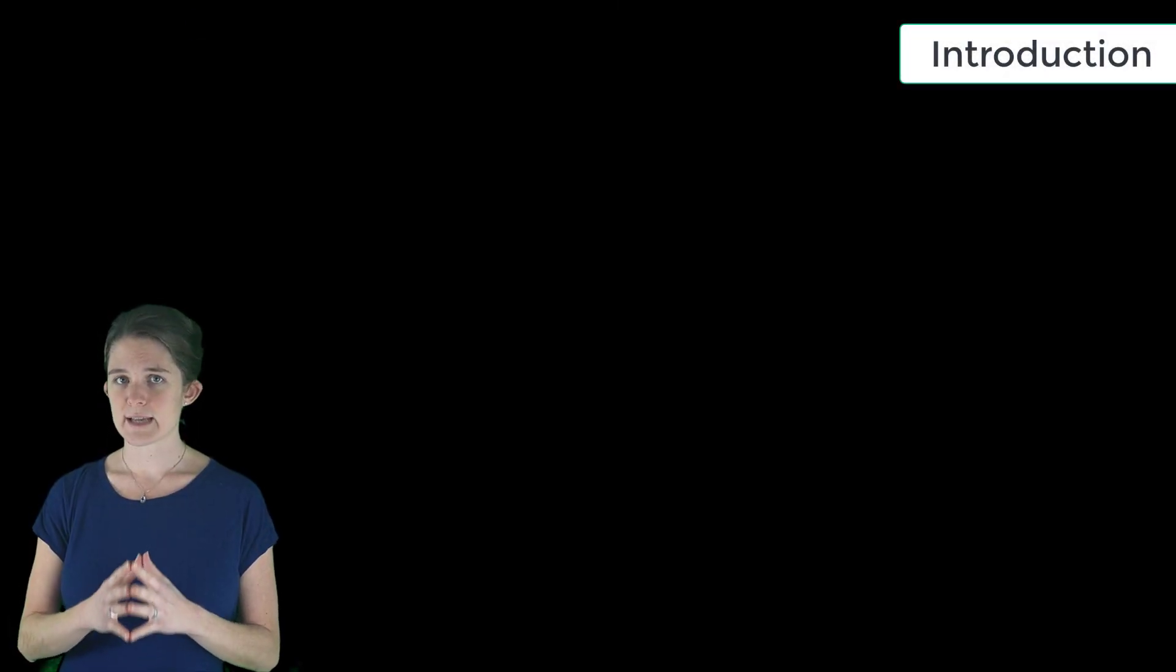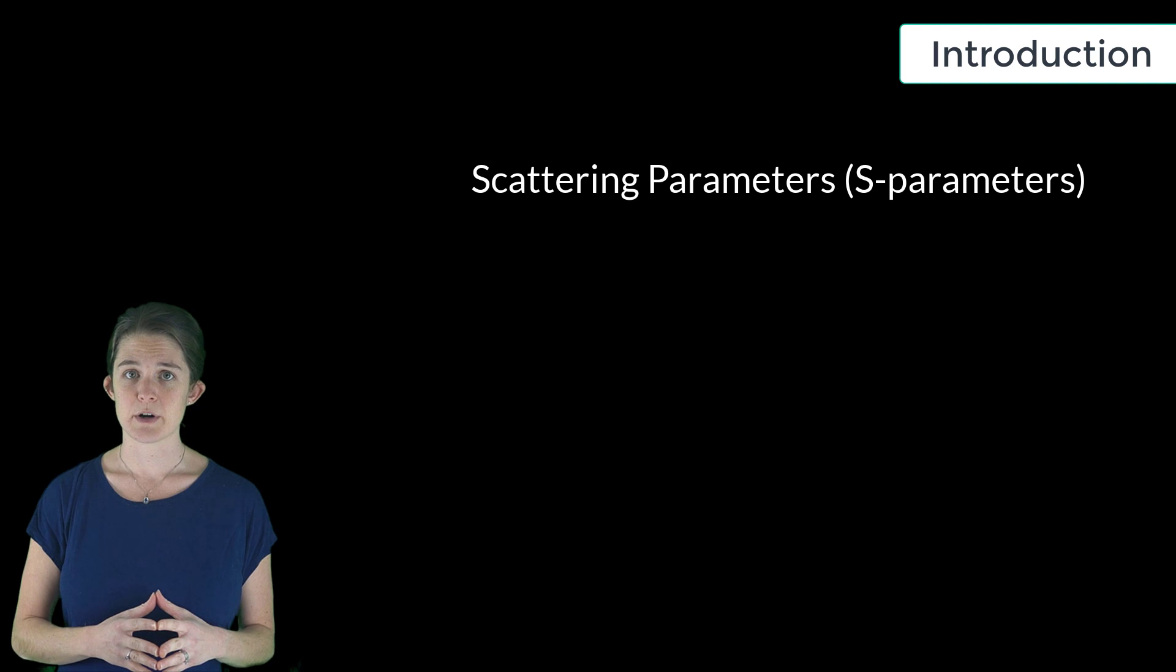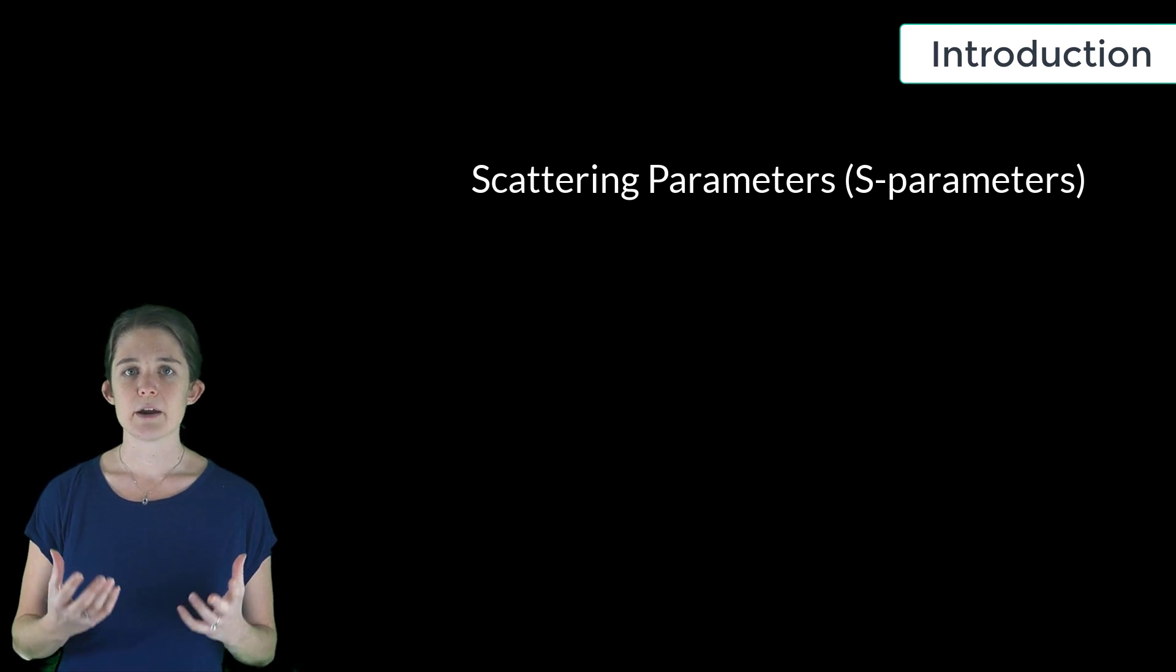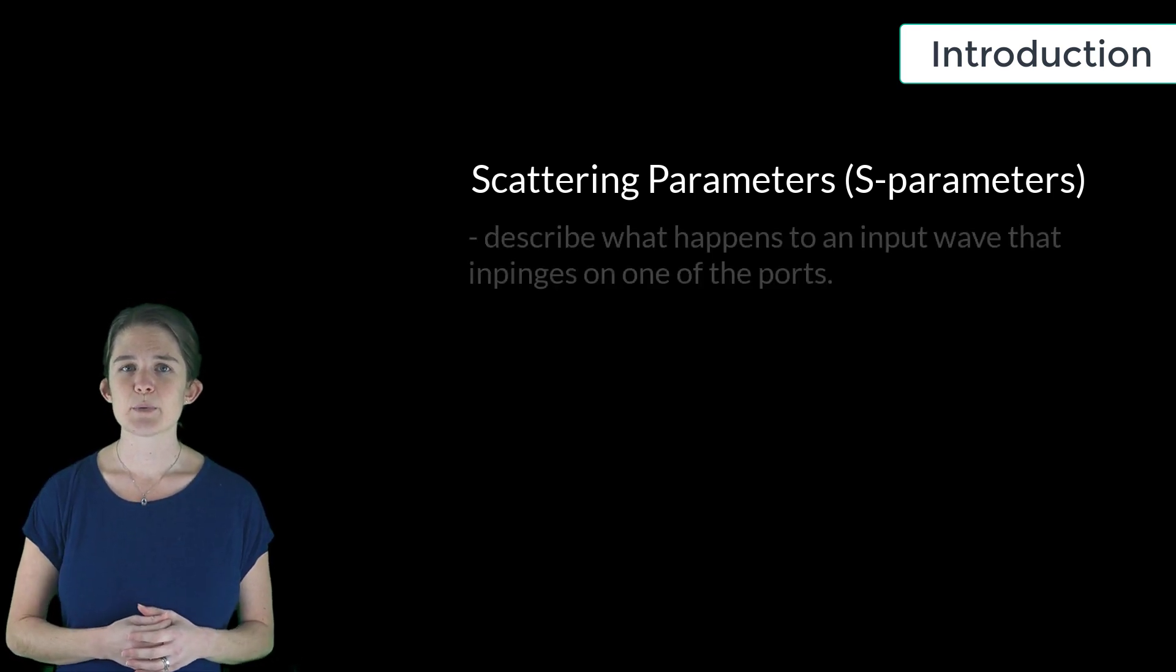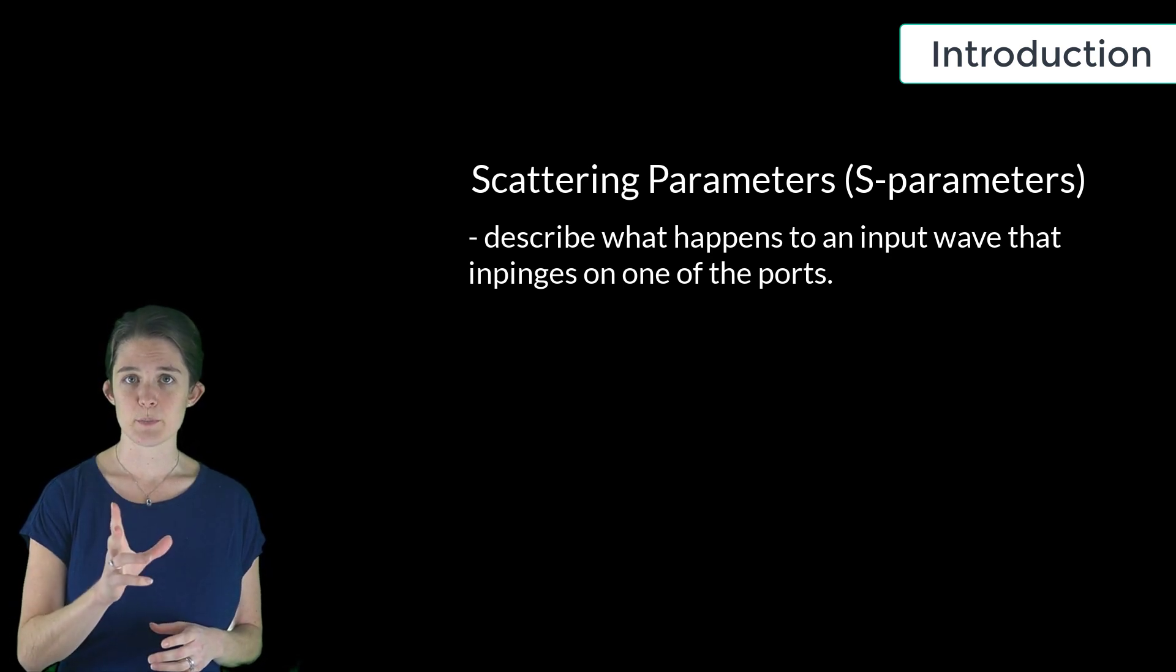In this module, we will discuss scattering parameters, or S-parameters. This is a method of network characterization that describes what happens to an input wave that impinges on one of the ports.